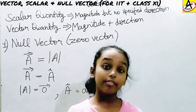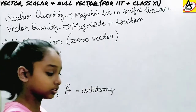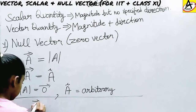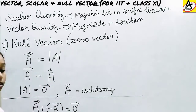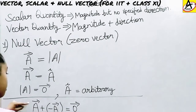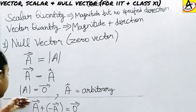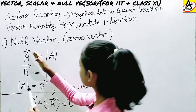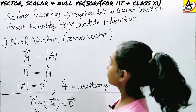Now I'm going to tell you how to obtain a zero vector. When we add a vector to its negative vector, we obtain a zero vector. The vector can be called A, B, C, D, or any letter. I've told you how to represent the magnitude of any vector, how to represent its direction, and how to obtain a zero vector.